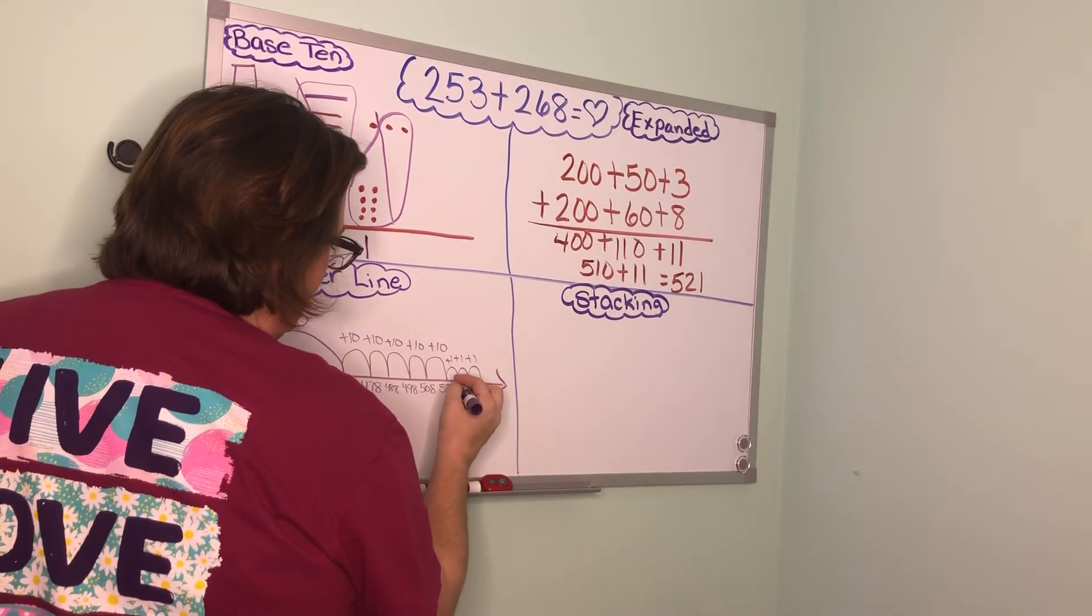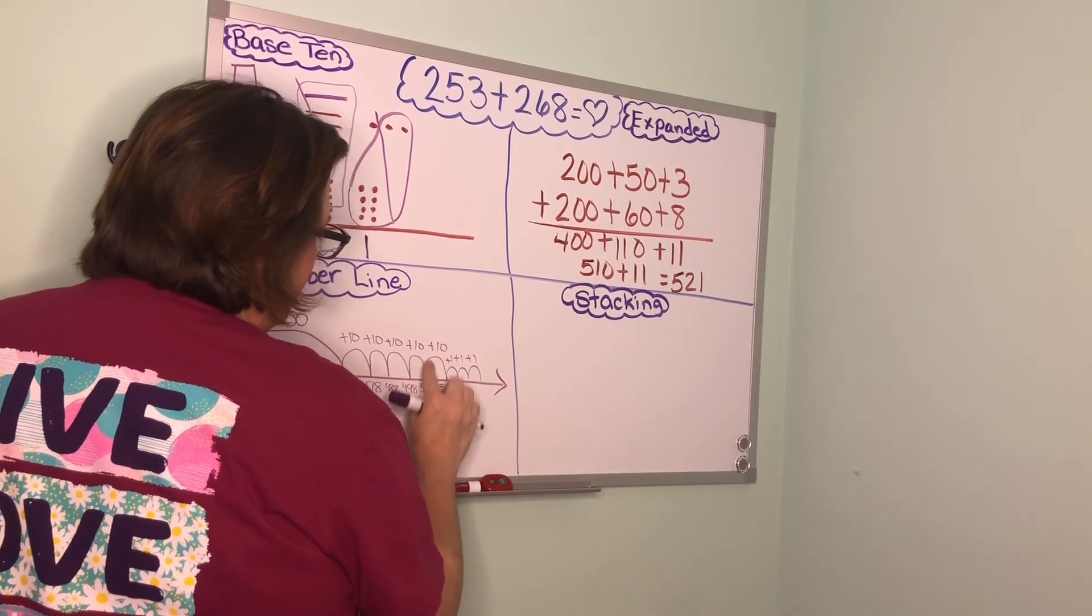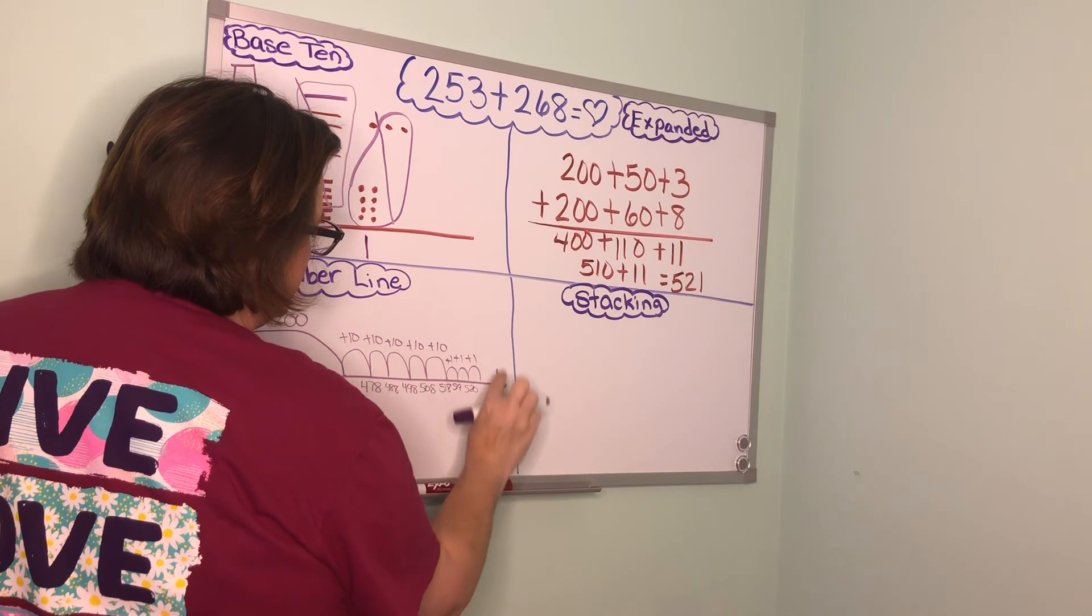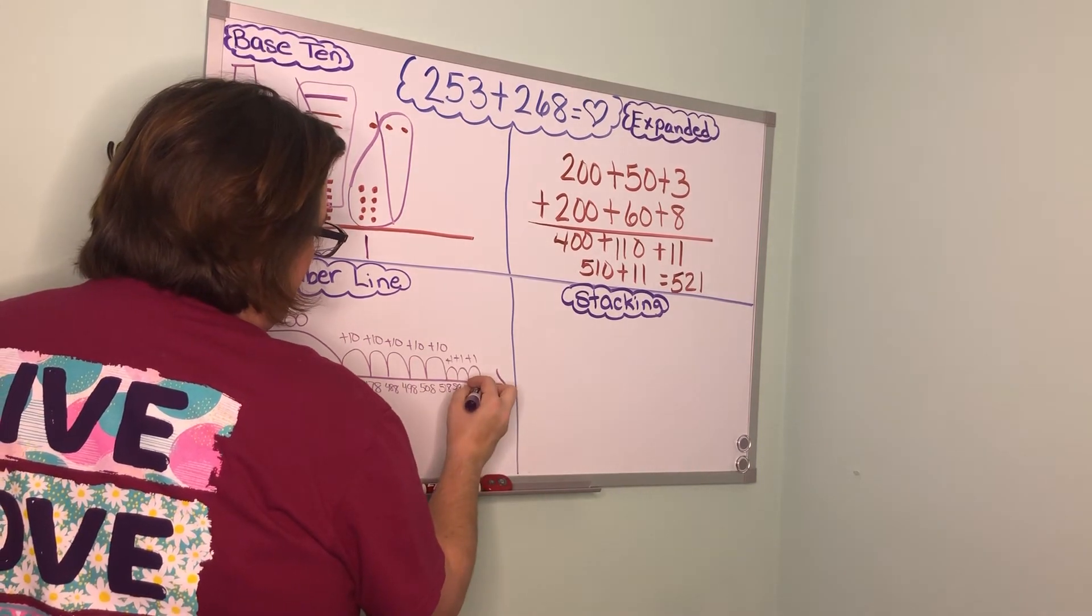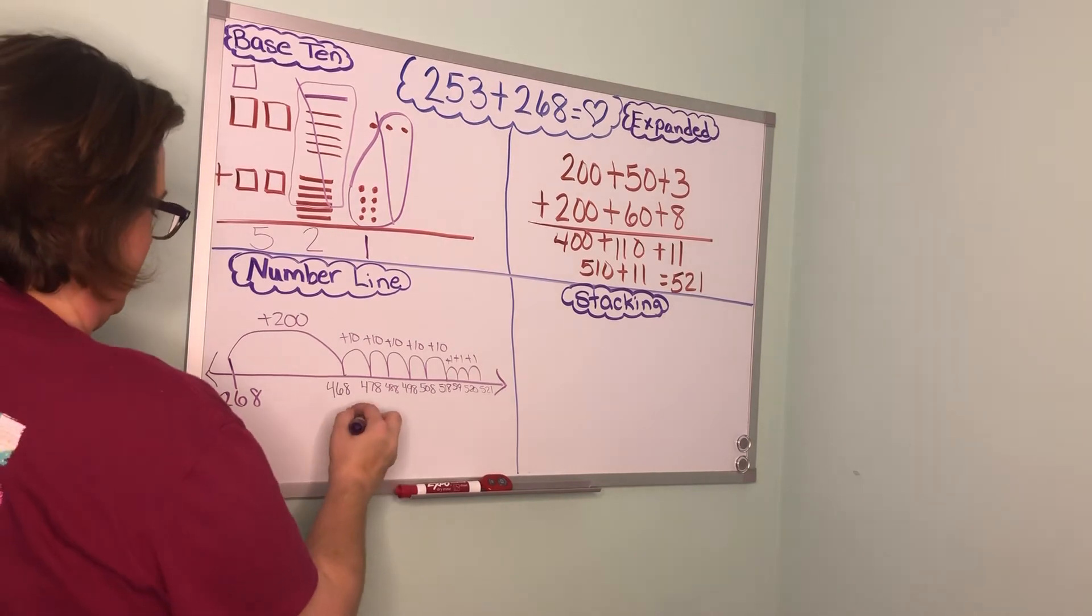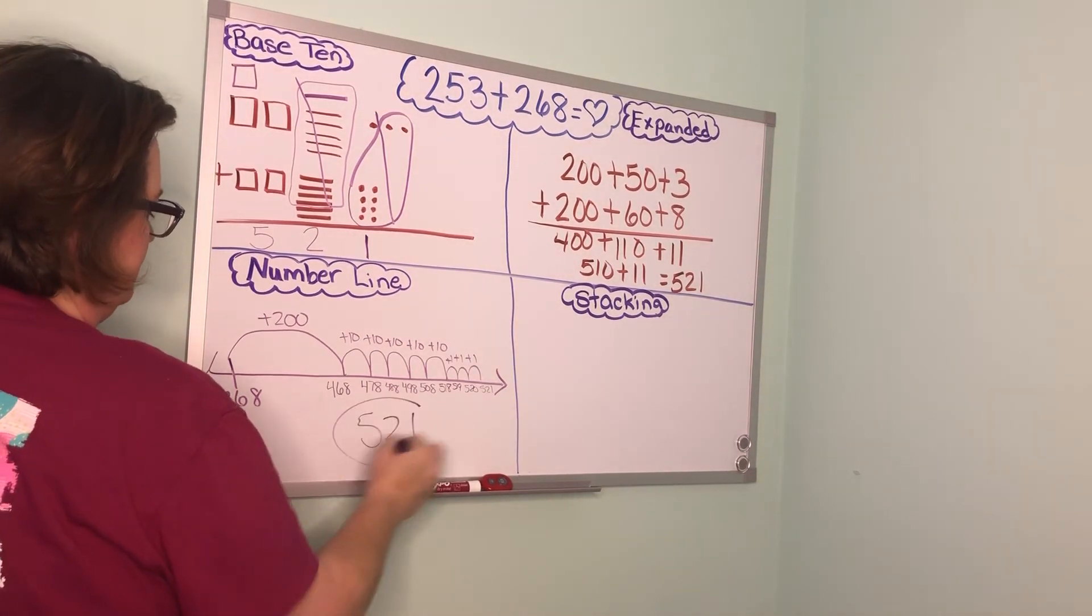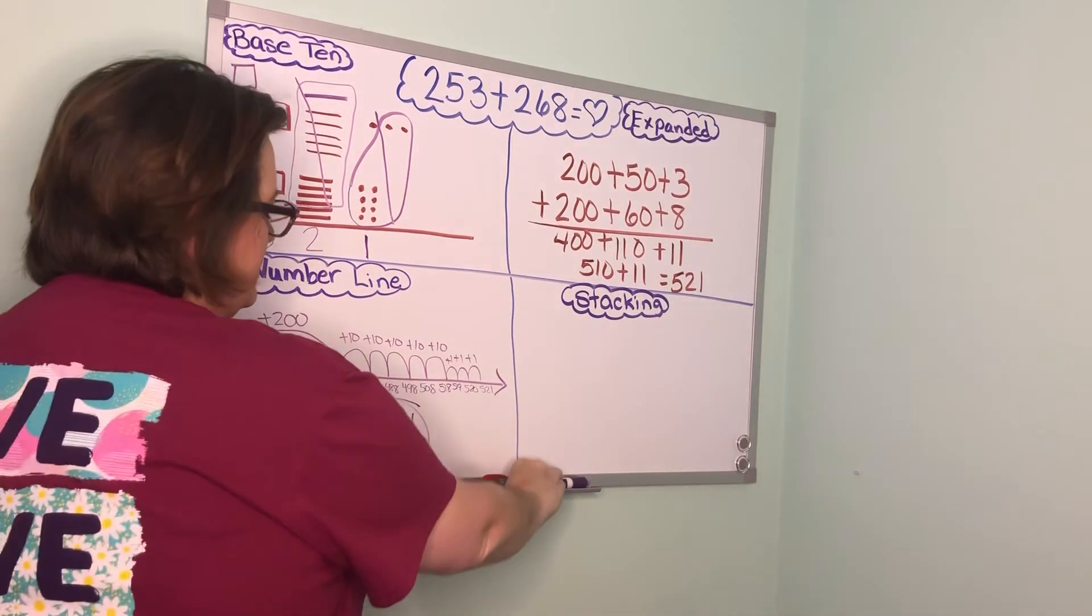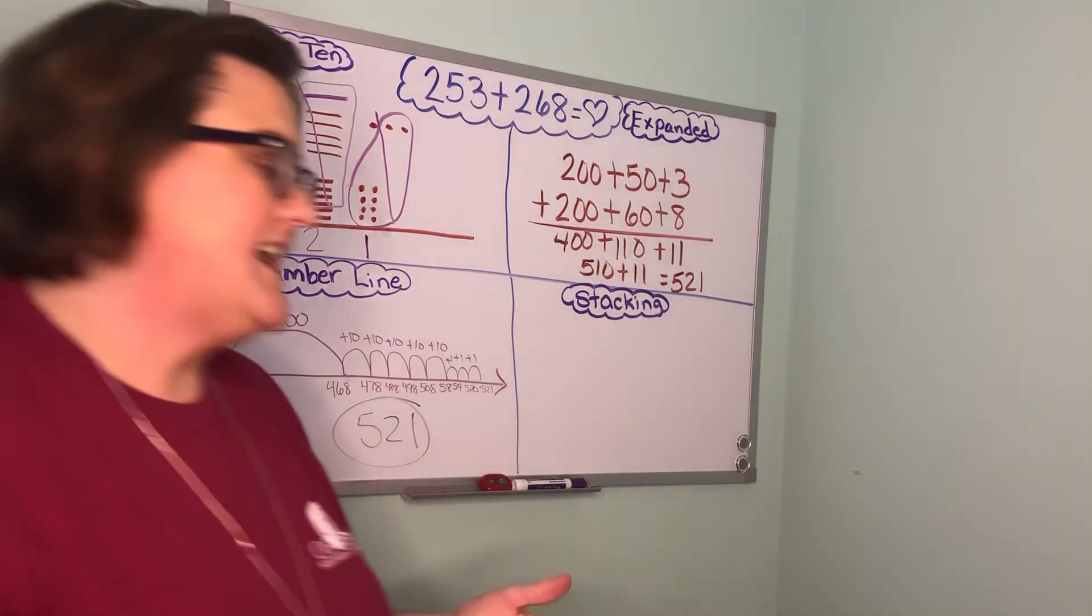518 plus 1 is 519. 519 plus 1 is 520. And 520 plus 1 is 521. So our answer is 521 on the number line. 521 on the number line.